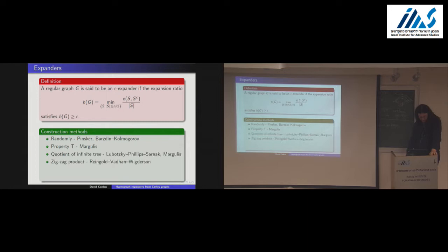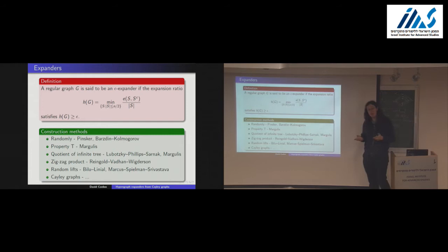There are several other constructions: the Ramanujan graphs of Margulis and Lubotsky-Phillips-Sarnak; the zigzag product construction due to Reingold, Vidan, and Wigderson; random lifts, which recently were used by Marcus, Spielman, and Srivastava to prove that there are bipartite Ramanujan graphs of all orders. The main thing I want to talk about is how you construct expander graphs using Cayley graphs.